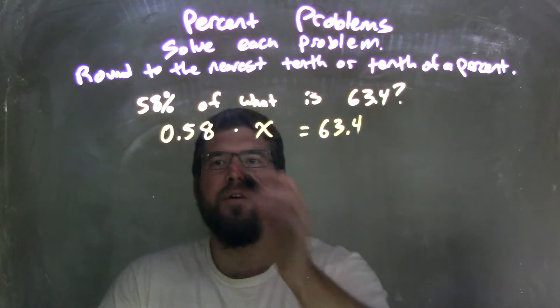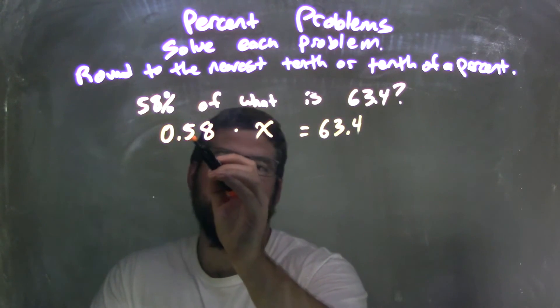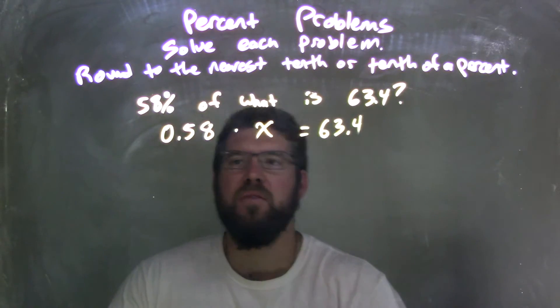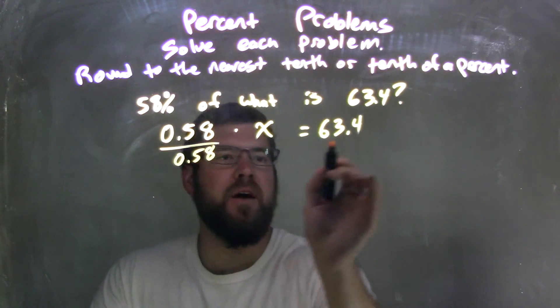0.58, 58% of what, is 63.4. We solve that and divide by 0.58 on both sides.